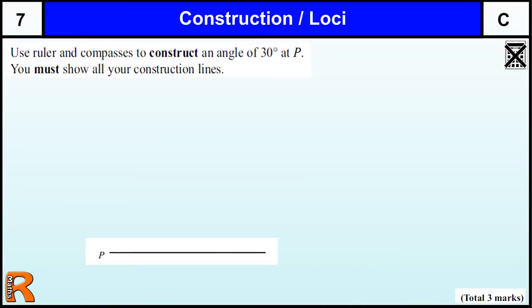Okay, constructions and loci, grade C, level 7. An unusual one, this. Usually we're asked to construct perpendicular bisectors or angle bisectors, although this one is including an angle bisector. But you need to use a ruler and compass to construct a 30-degree angle at P. You must show all construction lines.